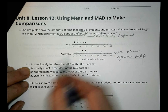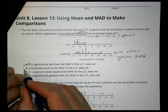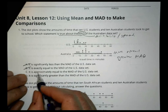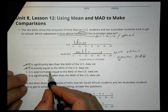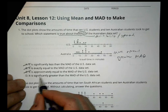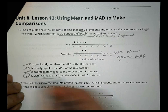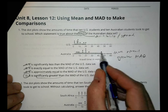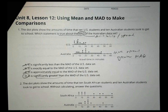So is the Australian MAD less than the US? No. Is it equal to the US? No. Is it approximately equal? No. Is it significantly greater? Yes — we can see that the Australian data has a much greater range, so we're going to say it has a greater mean absolute deviation.